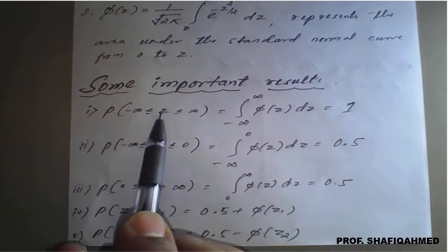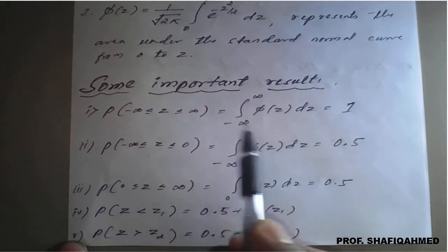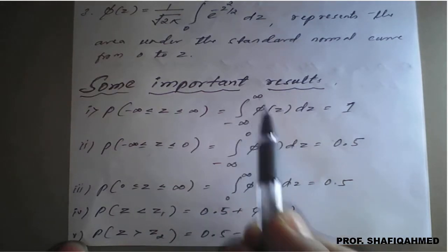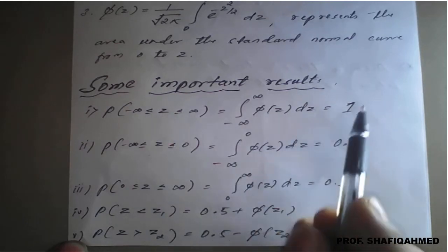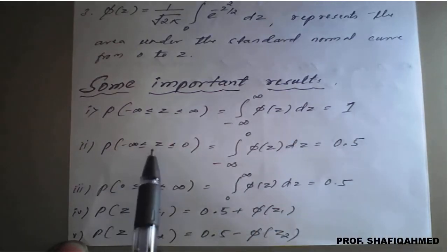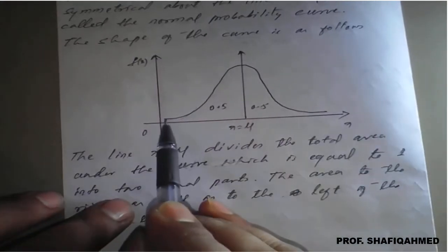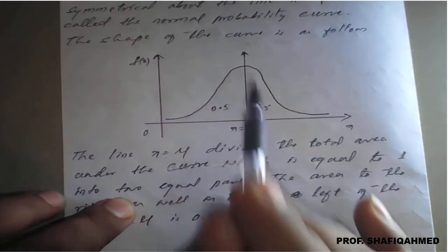P of z, where minus infinity is less than or equal to z less than or equal to infinity, can be represented as the integration from minus infinity to plus infinity of φ(z) dz, which is equal to 1. Referring to the diagram, minus infinity to plus infinity means the complete area, and the result is 1.